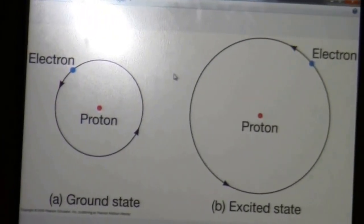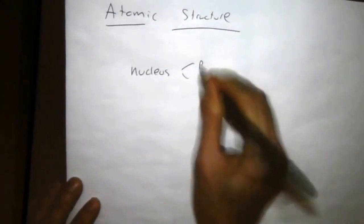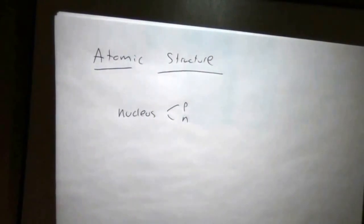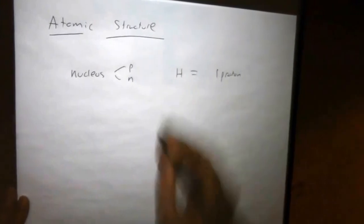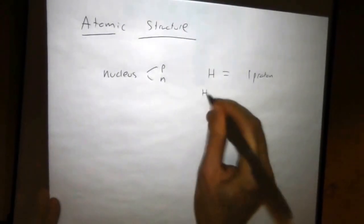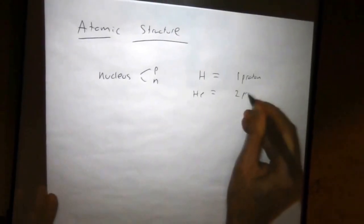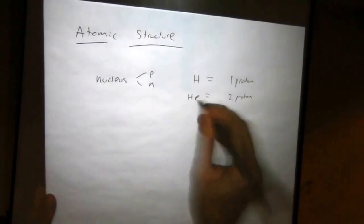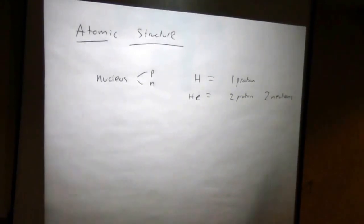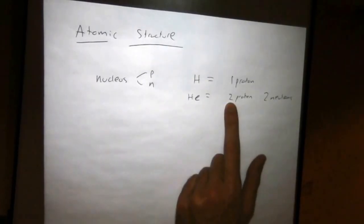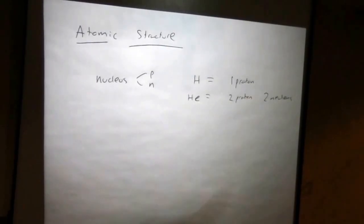The basic structure of an atom is you have a nucleus. And in the nucleus you have protons and neutrons. The simplest atom is just one proton, and that's hydrogen. The number of protons determines the element. Like helium has two protons, and the most common form of helium has two neutrons as well. But you can change the number of neutrons, and those are called different isotopes. But if you change the number of protons, you're changing the element.